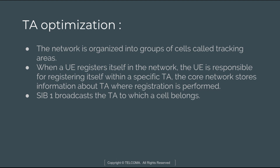Tracking areas are used for EPS mobility management when paging idle user equipment to notify them about incoming data connections. The System Information Block broadcasts the tracking area to which a cell belongs, and it is broadcast every 80 milliseconds. A single tracking area can span multiple MMEs or be within a single MME area. A Tracking Area Identifier contains the Mobile Country Code, Mobile Network Code, and Tracking Area Code.